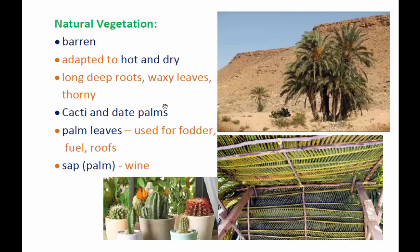The natural vegetation in the Sahara Desert is barren — very scanty, almost no plants — because of the hot and dry type of climate. The growth of plants is not supported, so there are few plants and even few animals. Those that exist are adapted to the hot and dry climate: they have long deep roots, waxy leaves, and thorny branches. One of the best examples is cacti and date palms — these are the important plant varieties found in the Sahara Desert.